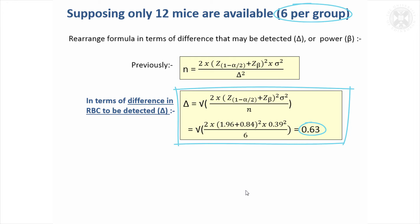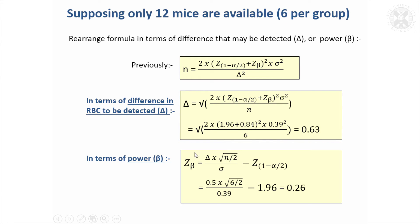The other way around we could do it is, we could say we've got six mice per group, we'll assume we still want to detect a difference of 0.5, but how much power have we got to do that?